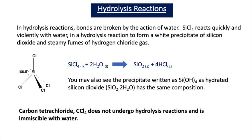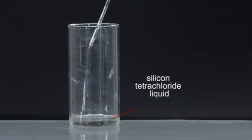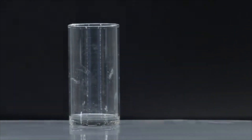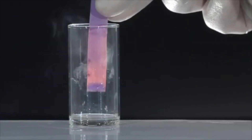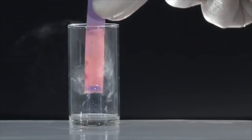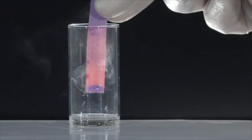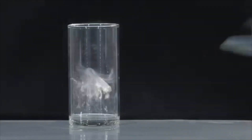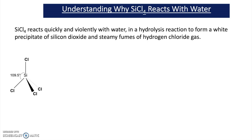This video clip is courtesy of Cardiff University and the Royal Society of Chemistry. Here we have some SiCl4 — it's a liquid — and we're going to place in the beaker a damp piece of blue litmus. Instantly the SiCl4 starts reacting violently with the water on the litmus paper, producing misty fumes of hydrogen chloride gas. The litmus paper turns red because the hydrogen chloride gas is acidic, and you will also end up with the formation of a white solid, which is silicon dioxide.